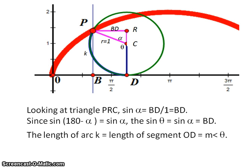Also, the length of arc k is equal to the length of segment OD. Remember when we were sketching it out? Point P moved the same distance as point D. So we get those two lengths that are equal, which gives us the measure of angle theta.